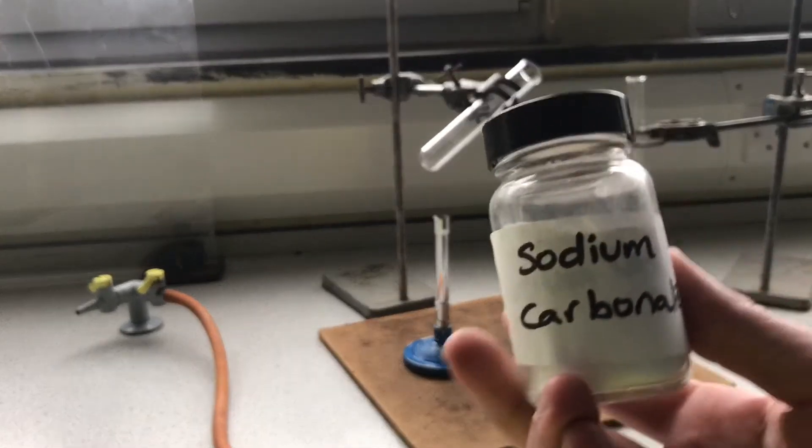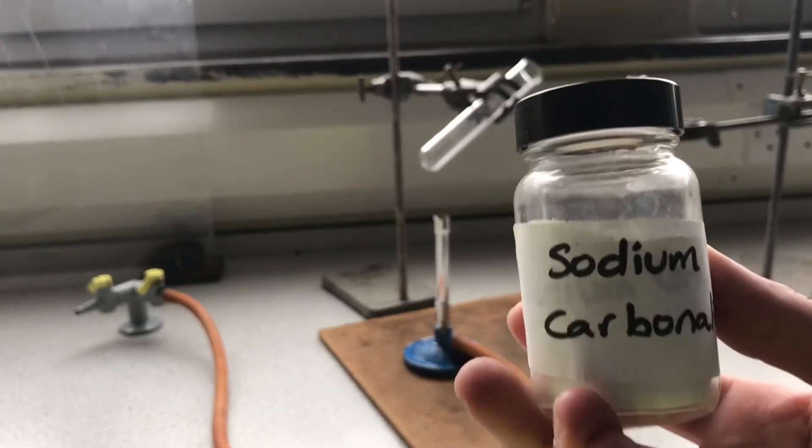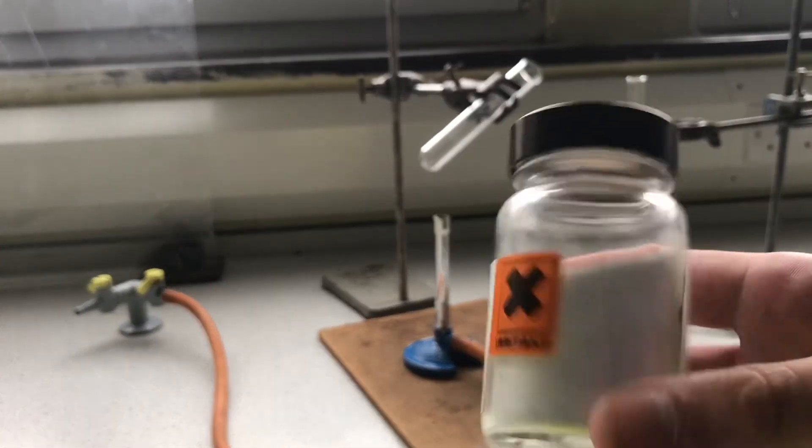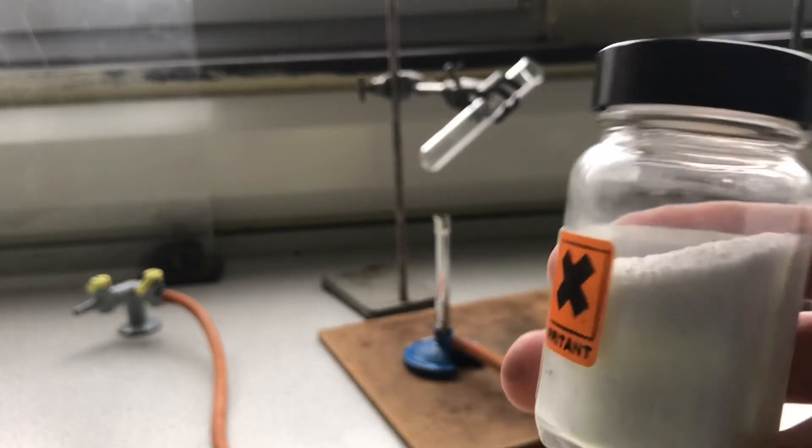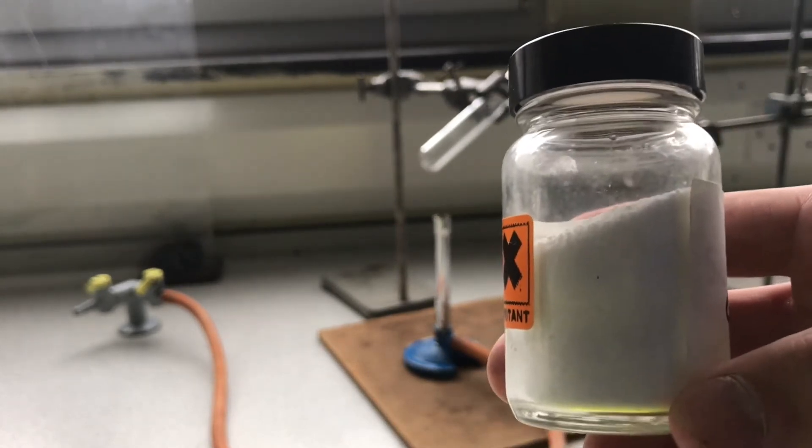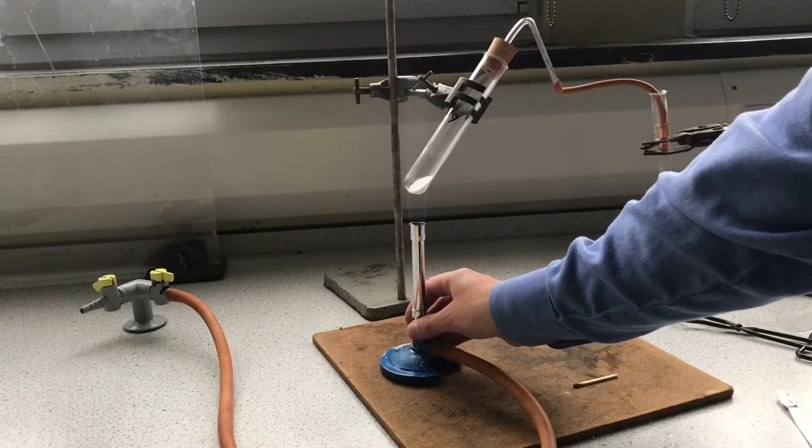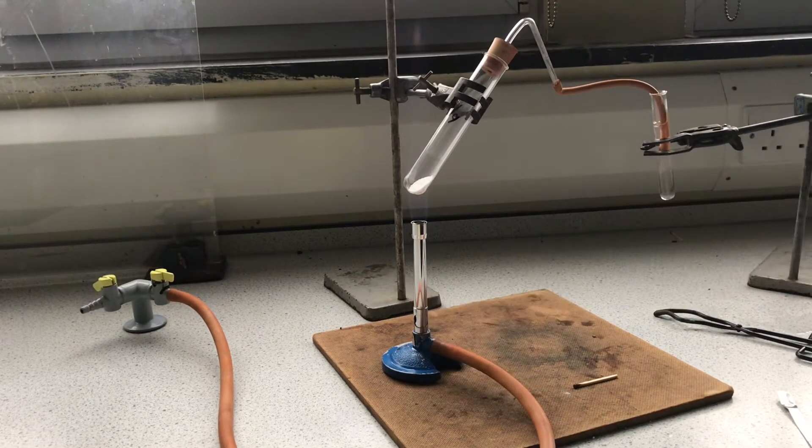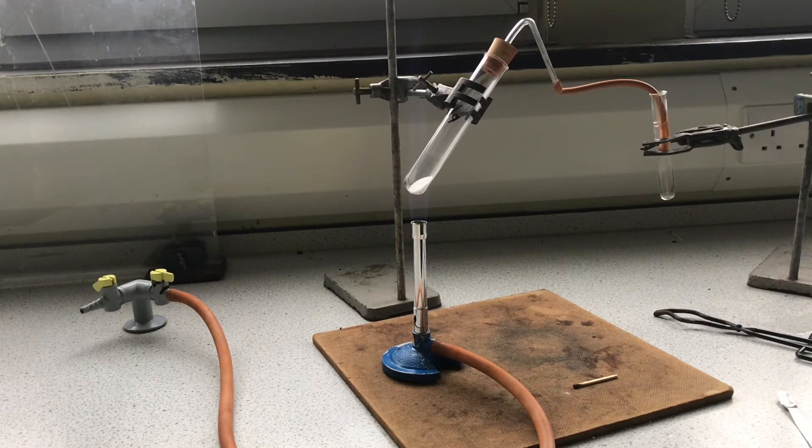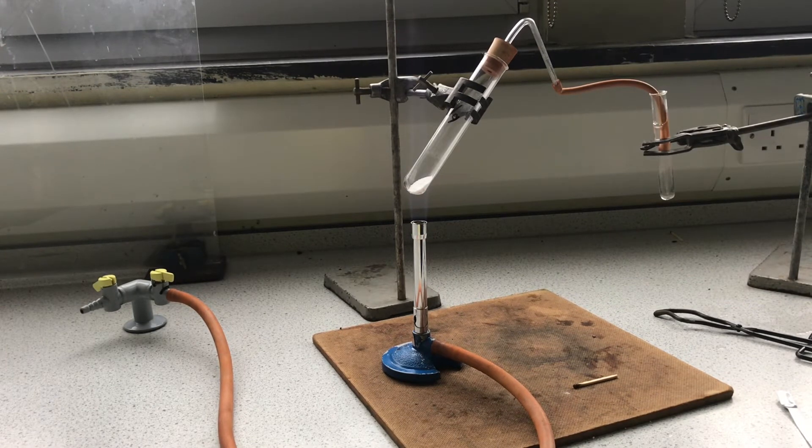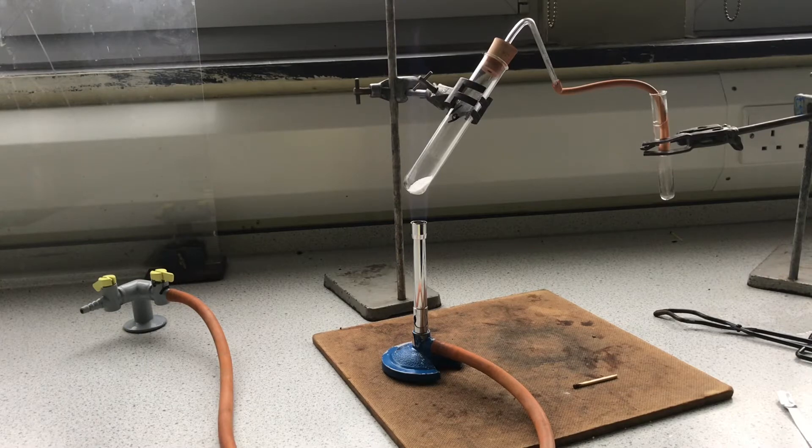The next metal carbonate is sodium carbonate. Just like magnesium carbonate, it is a white powder. By looking at them, it would be very difficult to tell the difference between them. We will complete the exact same method for sodium carbonate and potassium carbonate, observing the change in color of the lime water for both substances.